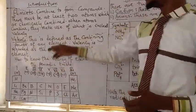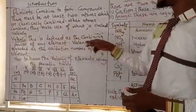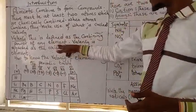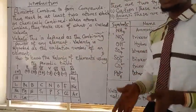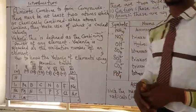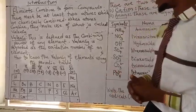Now what is valency? This is defined as the combining power of any element. So the combining power of an element is what we call valency. Or you can say valency is defined as the combining power of an element.